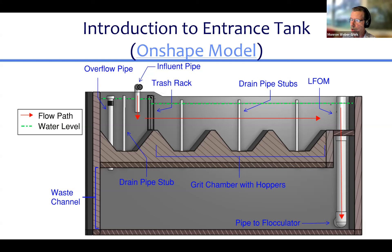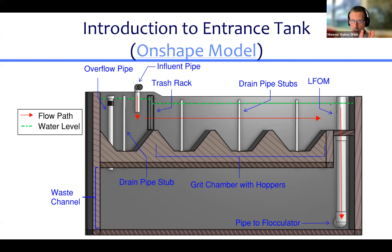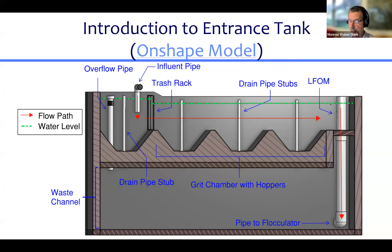The green line shows the water level, and there's going to be a drop in water elevation as it goes through the trash rack - that's called head loss. There's a drop in energy because we're using energy to push the water through the trash rack. The trash rack helps us remove large particles, debris, twigs, and even small branches, depending on how big the pipeline is, protecting the rest of the plant.